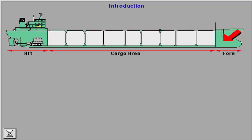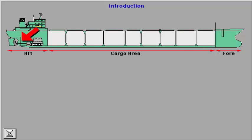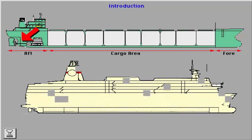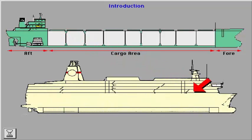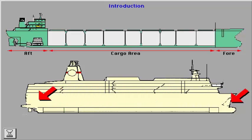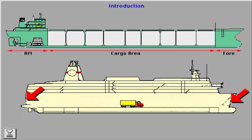Different ship types have distinct functional requirements depending on type of cargo and/or passengers to be carried. One may consider fore and aft parts common to all except for ferry and ro-ro vessels. Ferry and ro-ro vessels must be considered separately depending on openings fore and/or aft, and drive-through arrangements.